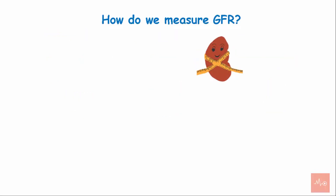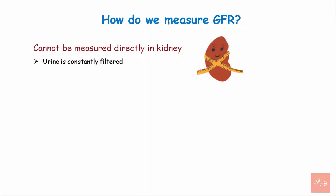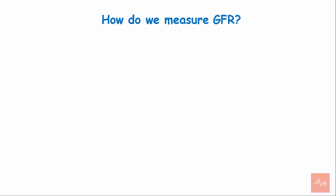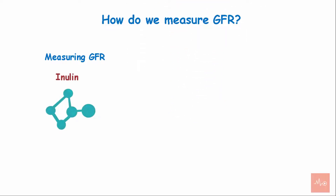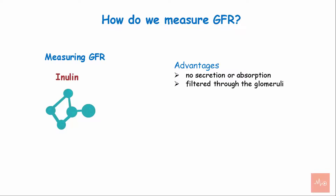GFR cannot be measured directly in the kidney because urine is constantly filtered and changes its composition throughout the kidney. GFR is measured by calculating the rate of elimination or clearance of a marker, either exogenous or endogenous, injected into the bloodstream. Inulin is one such polysaccharide used to measure GFR. It is effective because it does not get secreted or absorbed by the kidney but can be filtered through the glomeruli. Renal clearance of inulin is considered the gold standard.